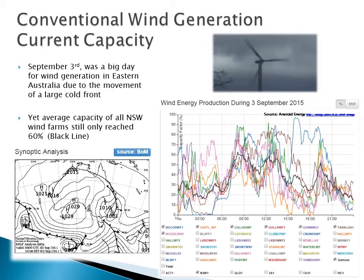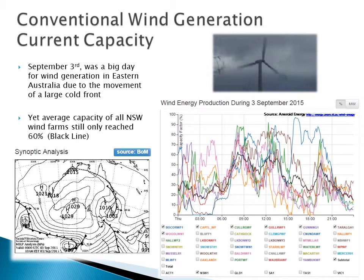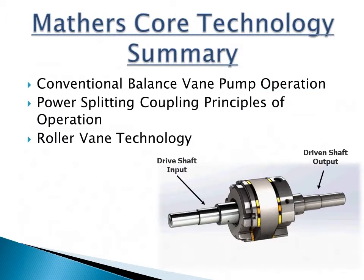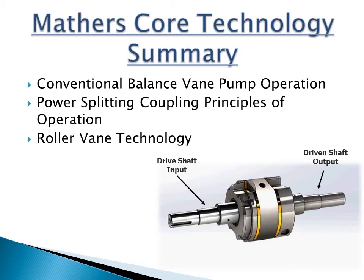It is proposed that by introducing many of the following Mathers technologies into the wind power generation sector, it can remove the above limitations and further increase efficiency and flexibility of wind power generation. The following slides will cover the core technologies proposed by Mathers hydraulics, starting with a basic explanation of a standard vane pump, moving onto the Mathers power split coupling operation, and also covering some roller vane technology.